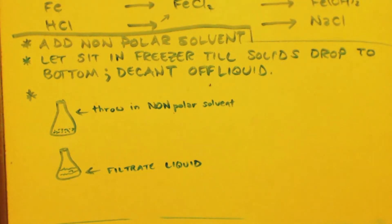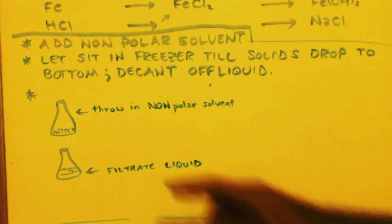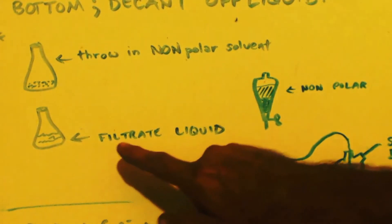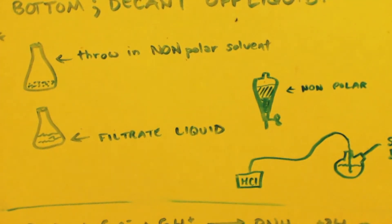Get it somewhat dry and take that and add it to your mother liquor. Now, you should have mainly your non-polar solvent and your methylamine inside this mother liquor, or this filtrated liquid. You're going to have other impurities in there like maybe unreacted nitromethane and some other stuff. If they're hydrocarbons, they will also be in your mother liquor.